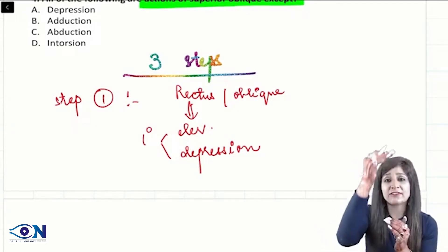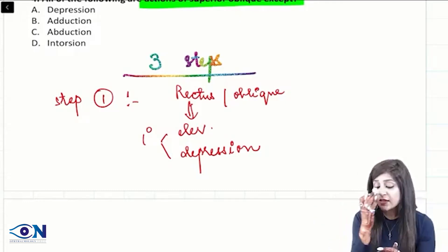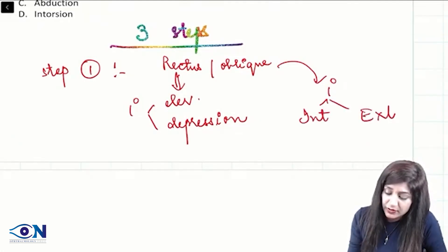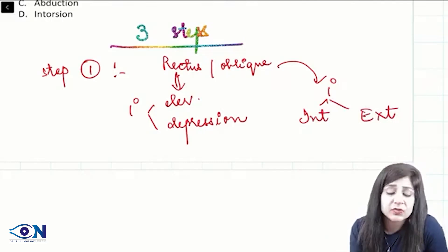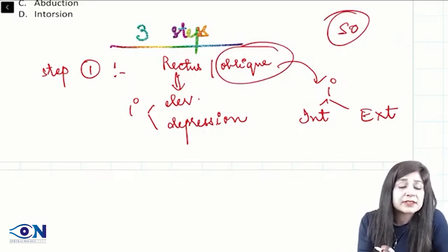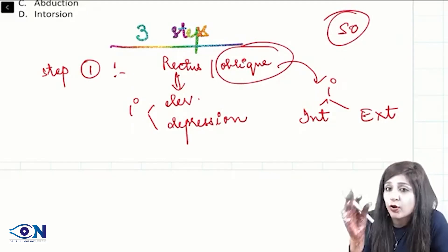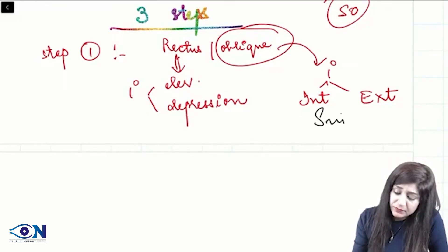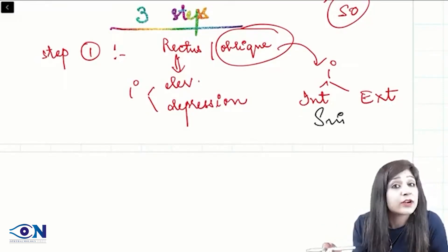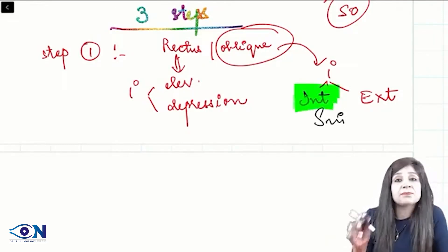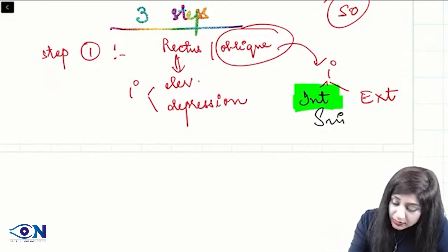If it is an oblique muscle, then the primary action will be either intorsion or extorsion. Now, if I am talking about superior oblique, we are going for the oblique muscles. Therefore, it's either intorsion or extorsion. And you have to remember the mnemonic SIN — superiors are intorsors. Therefore, the primary action of superior oblique will be intorsion.